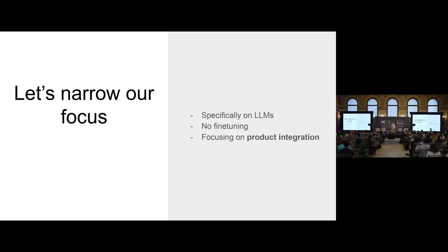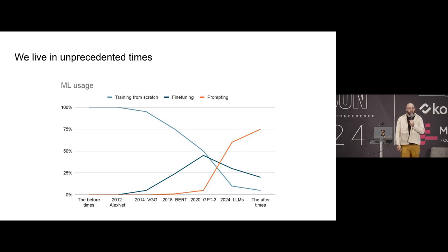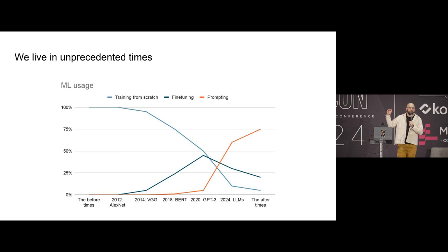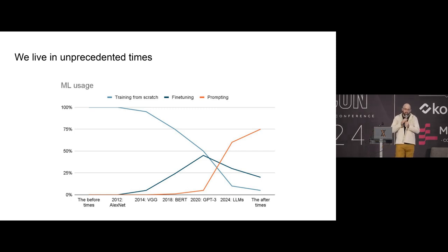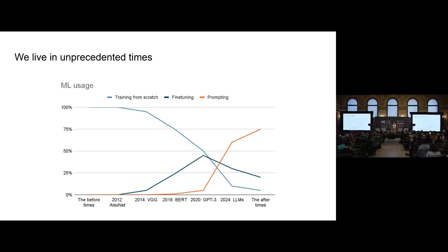Specifically, how to use LLMs that you don't train yourself — so no fine-tuning — and specifically focusing on how you integrate them into products. I think it's worth just taking a moment to appreciate that we live in unprecedented times. This is my rough graph, based on vibes only, of out of all of the people that do machine learning, how many train models from scratch, how many fine-tune existing models, and how many prompt existing models over time. It used to be the case that everybody trained models. Then fine-tuning became something you could do. And now prompting is something you can do — you can take some model that somebody else trained, not think about machine learning at all, and just get outputs out of it and try to build something on top of it. That's really never happened before. You have the power of machine learning without having to do a lot of the work, and that opens a lot of cool product opportunities.